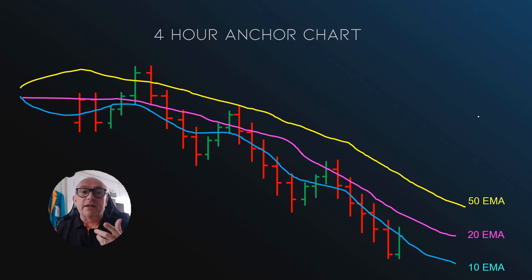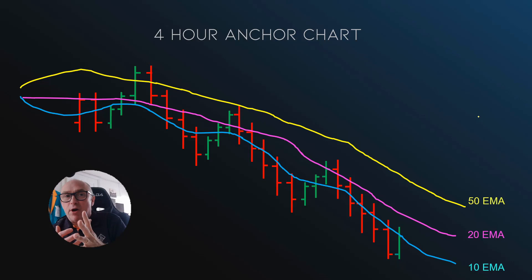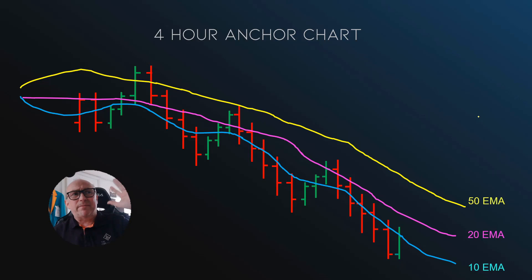Basically we look at the higher time frame to decipher the direction of the trend. I use just three moving averages — these are the only indicators I use with this strategy. It's just a visualization of the trend to help me identify a strong trend. The moving averages I use are the 10, 20, and 50 exponential moving averages — the EMAs. Ideally you want these fanned out. The bigger and wider the fan, and the bigger the angle of direction, the stronger the trend. Something like this for example is a very very strong trend. The stronger the trend the better it is for this strategy, and this is going to be on the four-hour time frame.